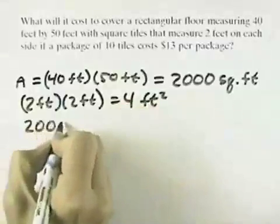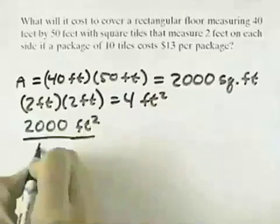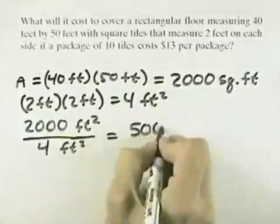So if we take our total area of 2,000 square feet and divide it by 4 square feet, that means we need 500 of the tiles.